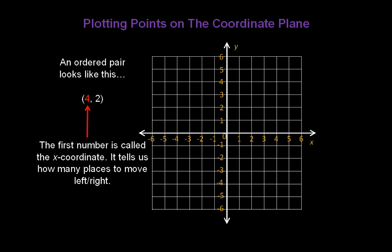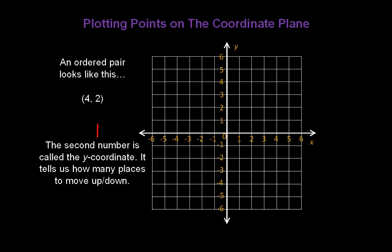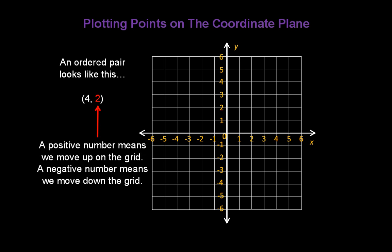The first number is called the x-coordinate. It tells us how many places to move left or right on the x-axis. A positive number means we move to the right; a negative number means we move to the left. The second number is called the y-coordinate. It tells us how many places to move up or down on the y-axis. A positive number means we move up; a negative number means we move down.